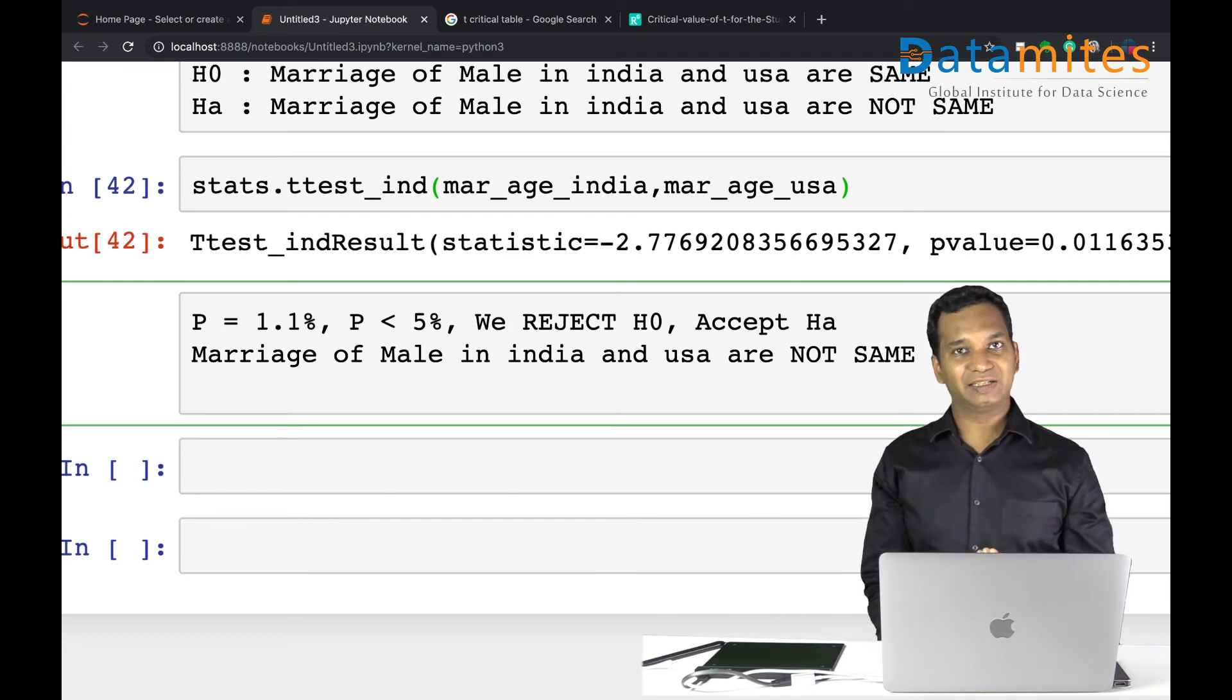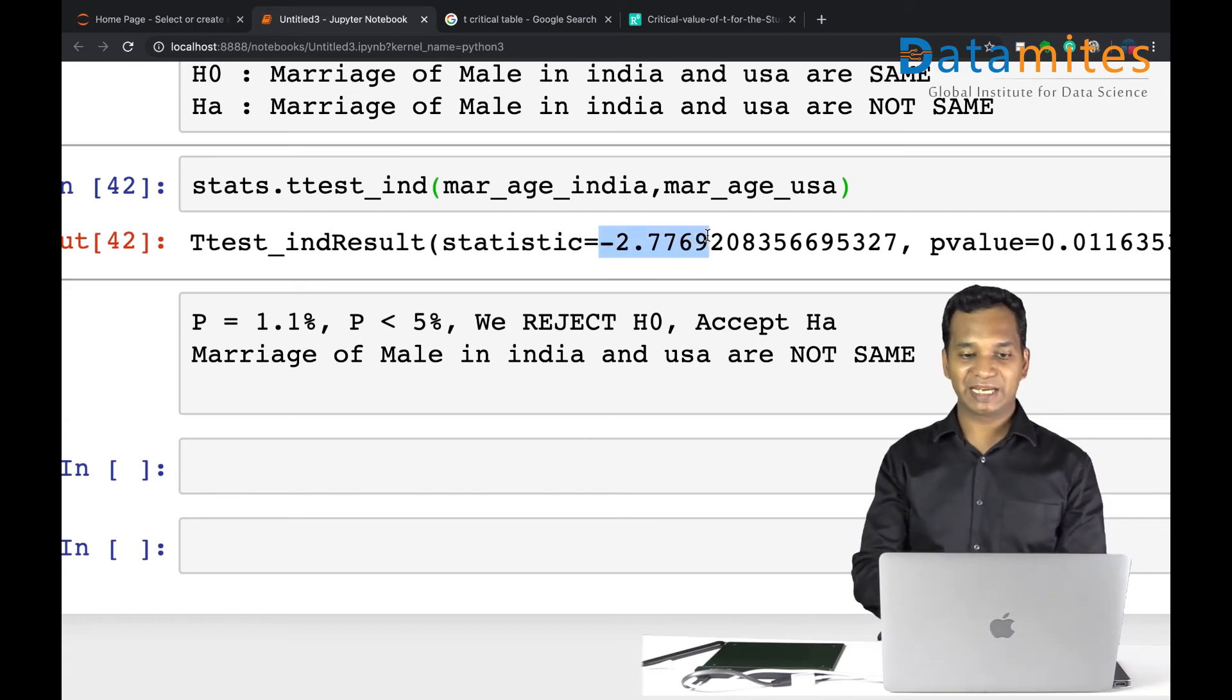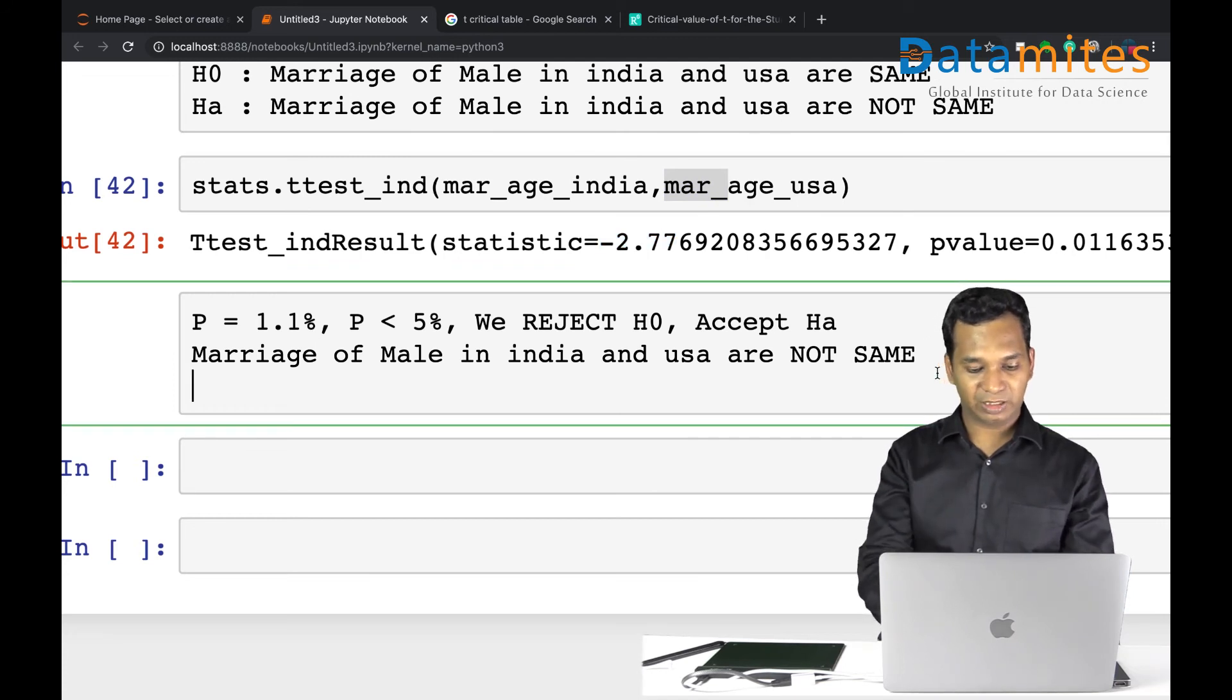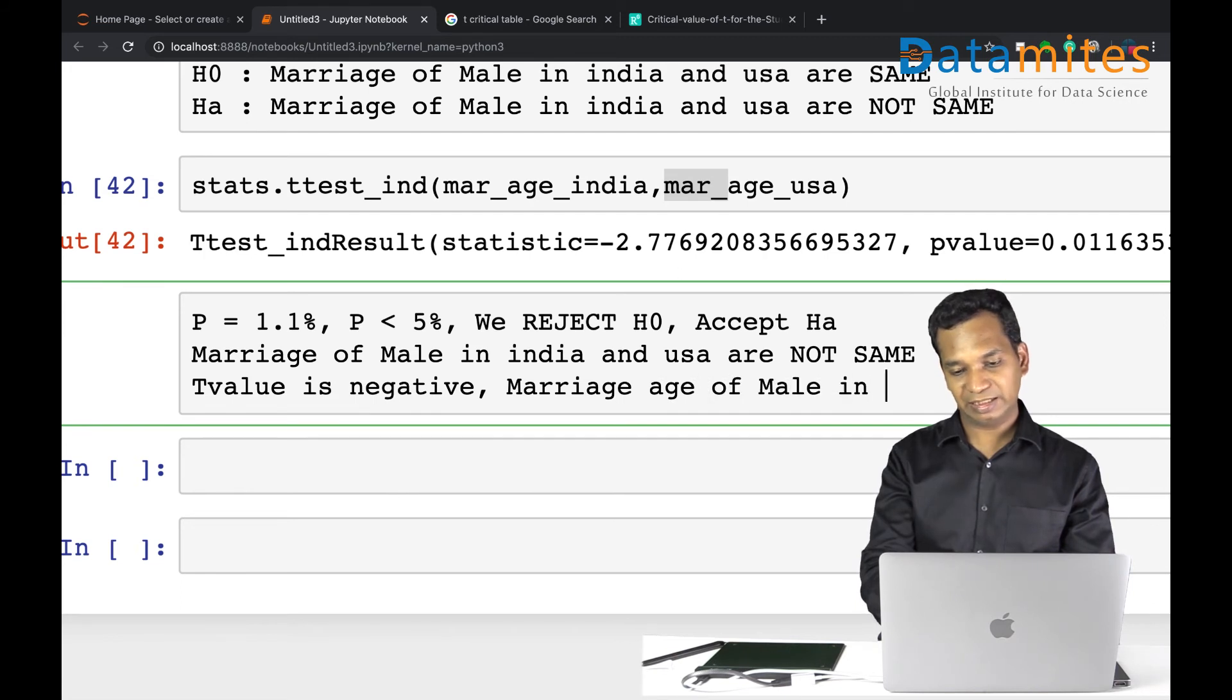If you want to say which is higher, is it more than USA or less than USA, you can see the sign of this t-value. If the t-value is negative, the first value is less than the second value. If the t-value is positive, then the first value is greater than the second value. In this case, t-value is negative, so I can simply say t-value is negative, so marriage age of male in India is statistically less than marriage age of male in USA.